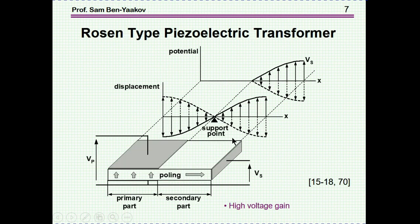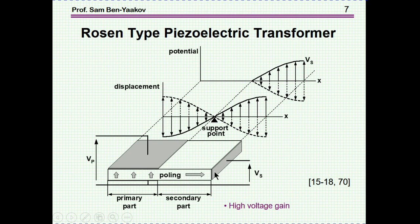Another structure of a piezoelectric transformer which is very popular and useful in high-voltage applications is the Rosen-type piezoelectric transformer. Here we have two electrodes on one side and the output on the side. What really happens is a sort of amplification of the vibration, resulting in an acoustic gain which is fairly high. These have been used to generate high voltage.